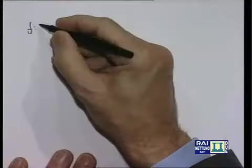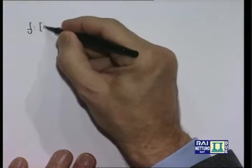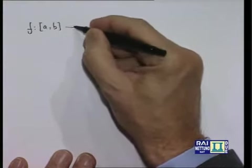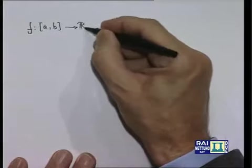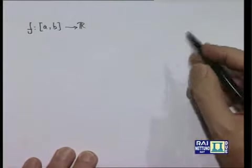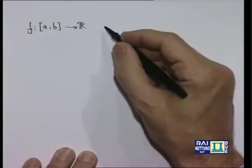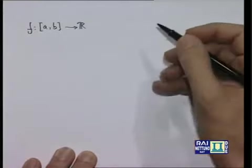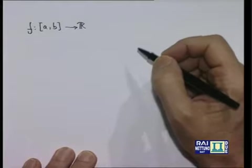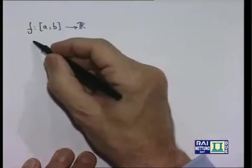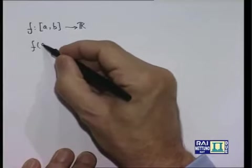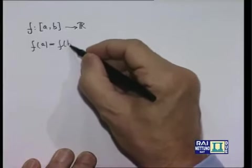La traduzione in termini matematici di questa semplice osservazione si può formulare così. Se abbiamo una funzione f definita in un intervallo chiuso [a, b] a valori reali, questa funzione la supporremo continua nell'intervallo [a, b] e supporremo anche che almeno nei punti interni all'intervallo [a, b] questa funzione sia derivabile, e infine supponiamo che f(a) sia uguale a f(b).